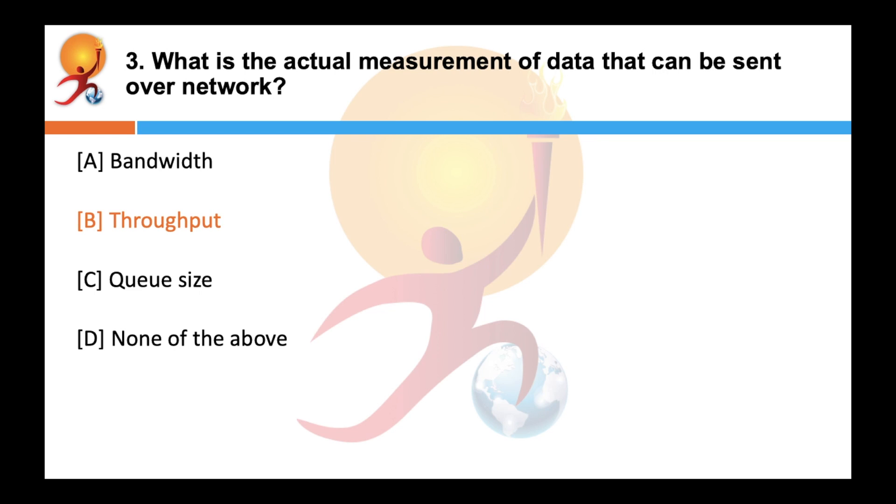Throughput is the actual measurement of the data that can be sent over a network. It is different from bandwidth, which is the maximum potential amount of data that can travel through a network. Throughput is the actual data.